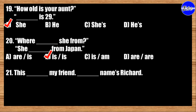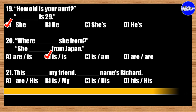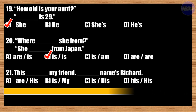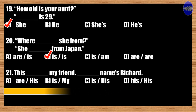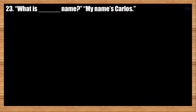Number twenty-one: This blank my friend. Blank name is Richard. A: are, his; B: is, my; C: is, his; D: his, his. The best answer is option C. This is my friend. His name is Richard.